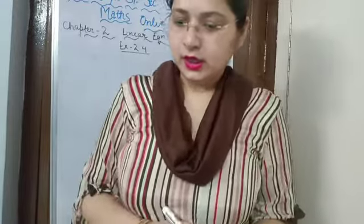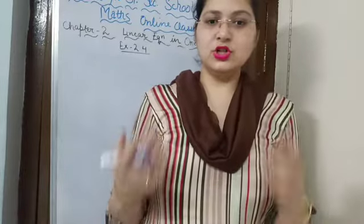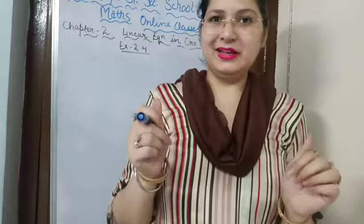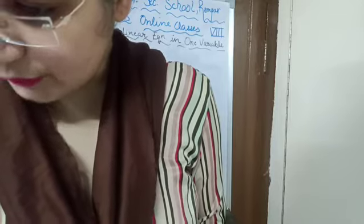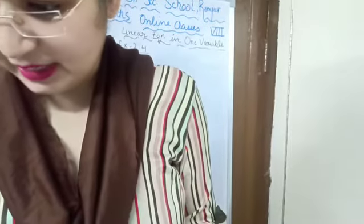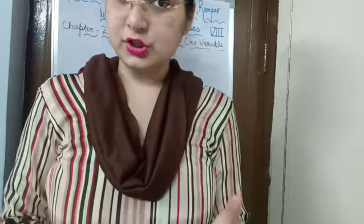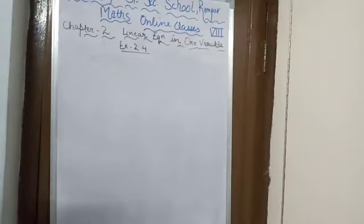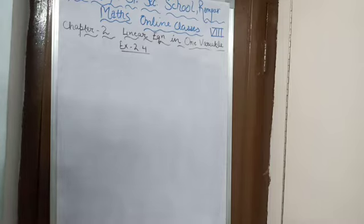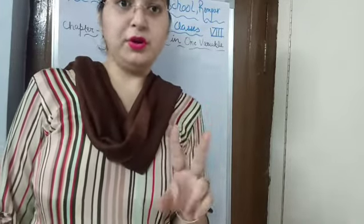Question 7 says: Hassan buys two kinds of cloth material for school uniform — shirt material and trouser material. Shirt material costs Rs. 50 per meter and trouser material costs Rs. 90 per meter. For every 3 meters of shirt material he buys, he also buys 2 meters of trouser material.